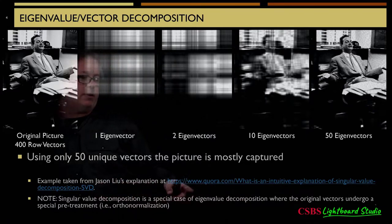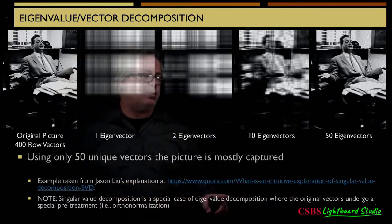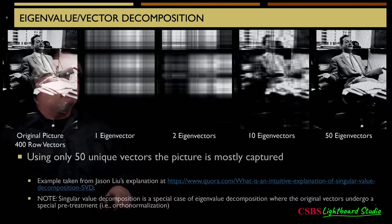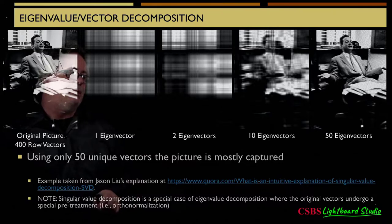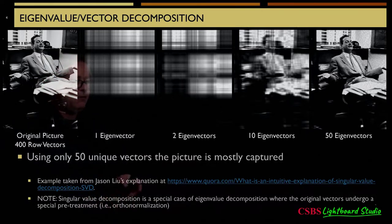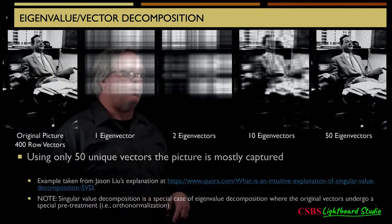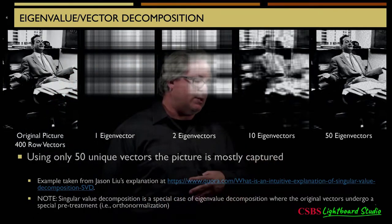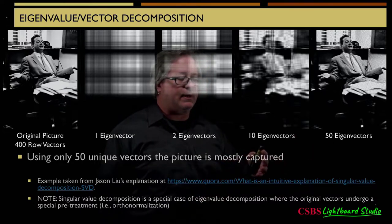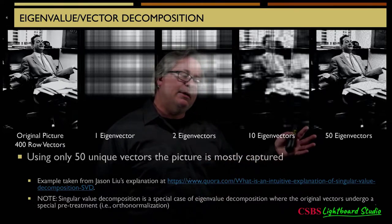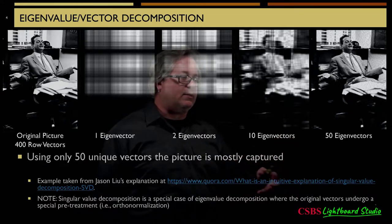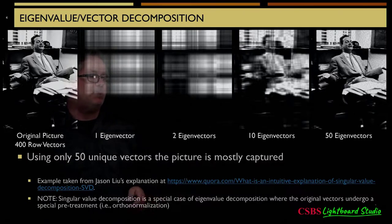I got this from a Quora post — look up Jason Liu, his explanation is pretty good. And note that singular value decomposition is a special case of eigenvalue decomposition where the original vectors undergo a special pretreatment — they're all set to have the same length through a process called orthonormalization. It does that first before doing the eigenvalue decomposition. That's singular value decomposition, but they're the same process more or less.